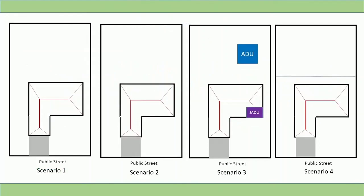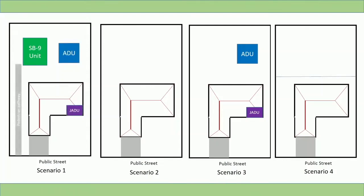Using the provisions of two-unit residential development, a lot could be developed in one of four ways. In the first scenario, a property developed with one single-family residence could add one SB9 unit plus an ADU and a JADU. Access to the new SB9 unit would be a walking path to the unit's front door, and parking would be in an enclosed garage. In this scenario, the property is not eligible for an urban lot split.